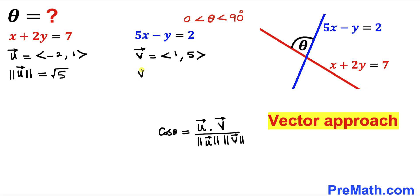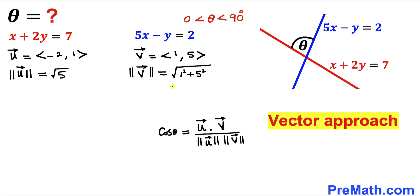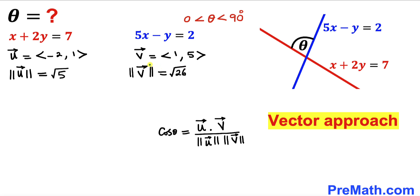Now we are going to calculate the magnitude of vector v, which is going to be equal to the square root of 1 squared plus 5 squared. That gives us 1 plus 25, which is equal to the square root of 26. So the magnitude of vector v turns out to be the square root of 26.